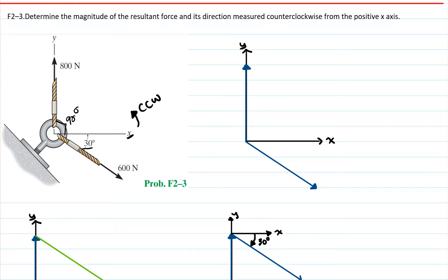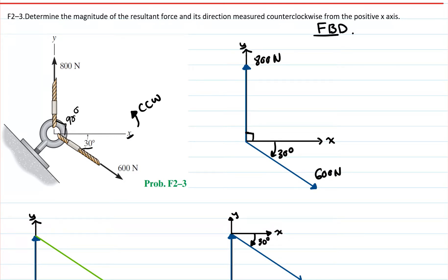The first thing you should do is draw a free body diagram. We draw the x and y-axis, then we draw a 600 Newton vector at a direction of 30 degrees and an 800 Newton vector at 90 degrees. Let's call the first one F1 vector and the second one F2 vector.